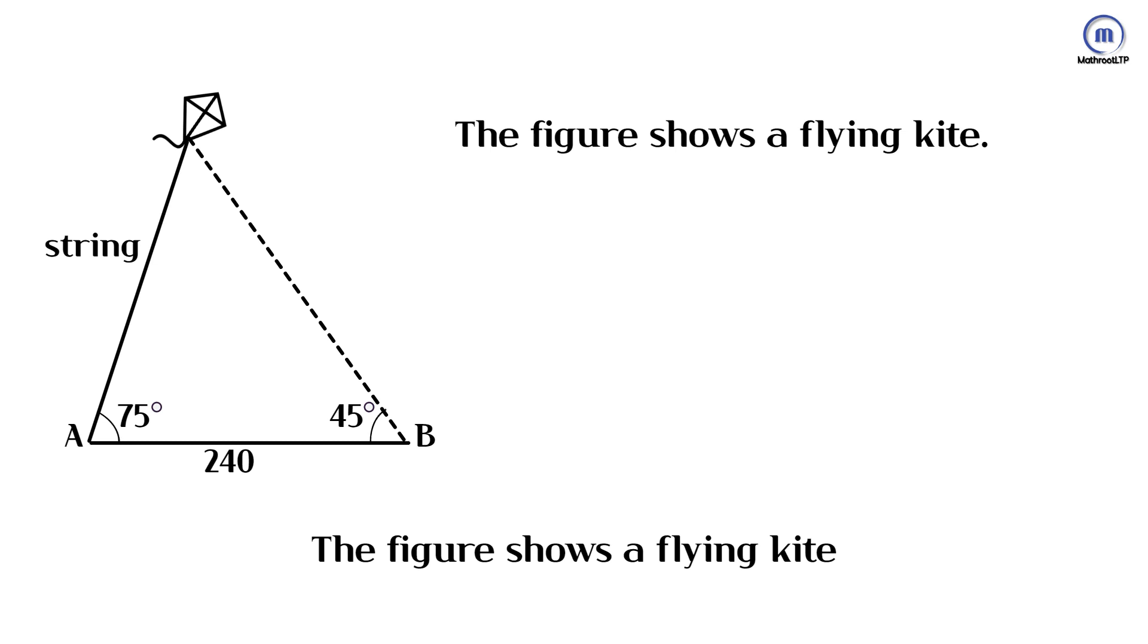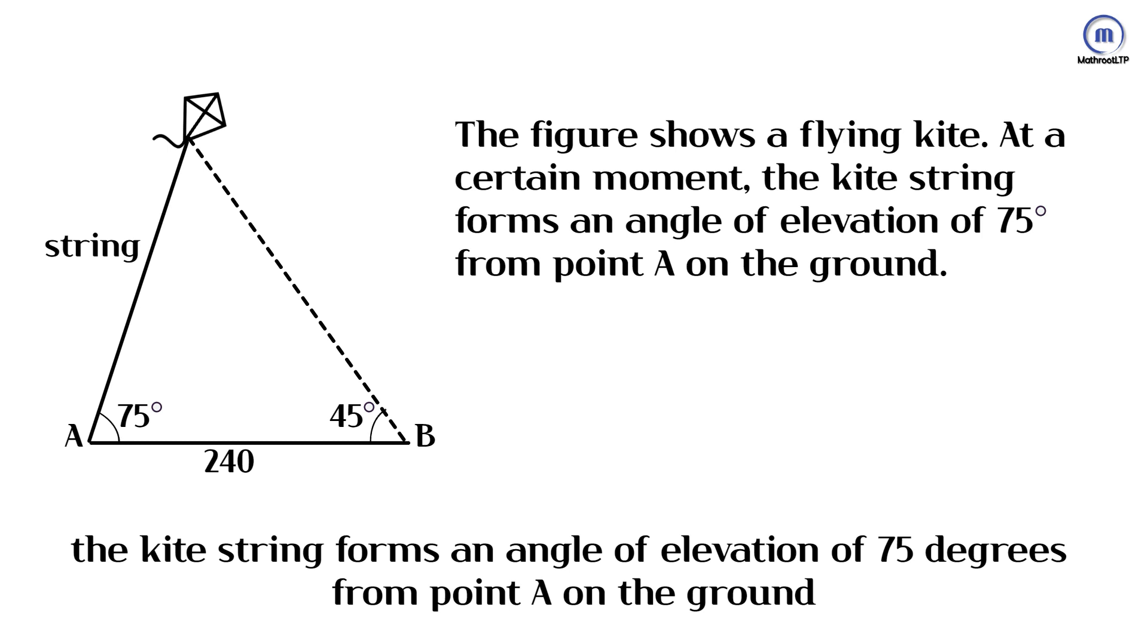The figure shows a flying kite. At a certain moment, the kite string forms an angle of elevation of 75 degrees from point A on the ground.